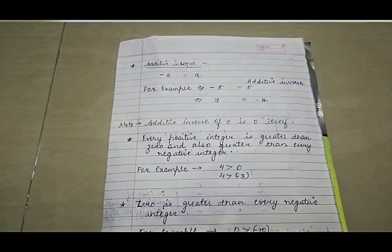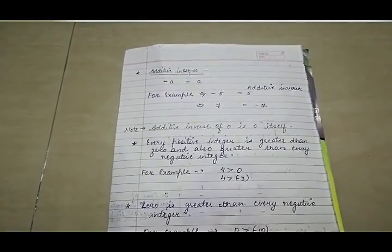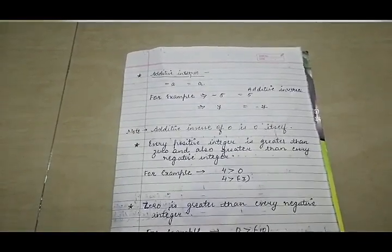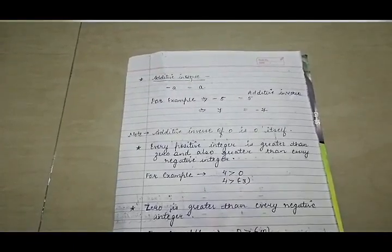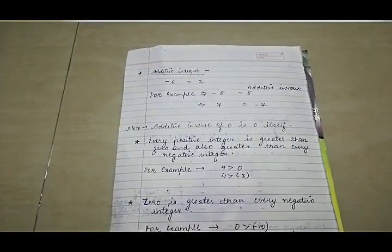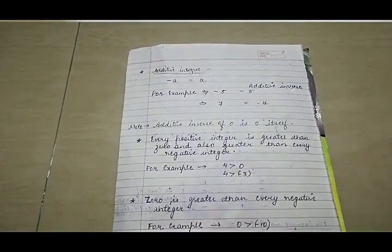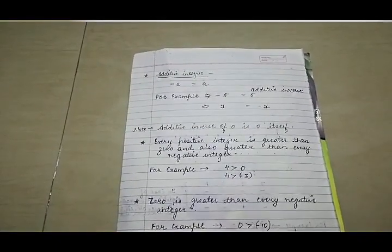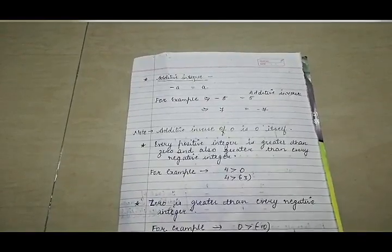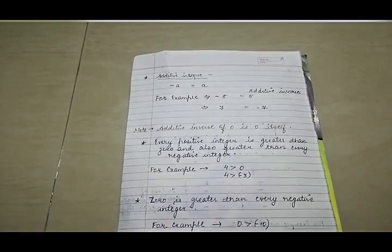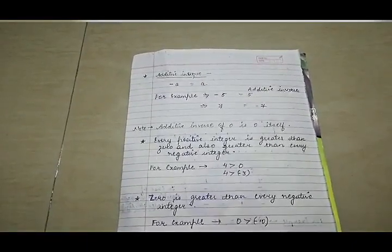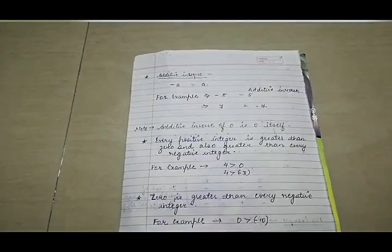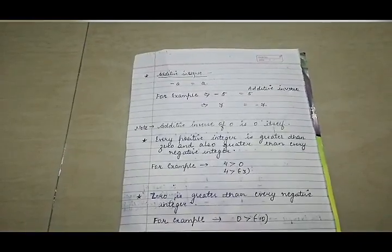The next topic is additive inverse. According to additive inverse, if there is any number minus a, then the additive inverse of minus a will always be positive, that is plus a. For example, the additive inverse of minus 5 is 5. The additive inverse of 7 is minus 7. Additive inverse means just the opposite: if a number is positive, its additive inverse is negative, and if negative, the additive inverse is positive. Also remember that the additive inverse of 0 is 0 itself — do not write minus 0 or plus 0.